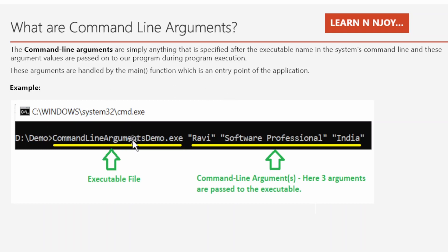Let's try to understand with the help of an example. Here I have opened a command prompt and written this command: CommandLineArgumentDemo.exe Ravi SoftwareProfessional India. So basically, this CommandLineArgumentDemo.exe is available in the demo folder under the D drive, and against this executable file I am passing command line arguments.